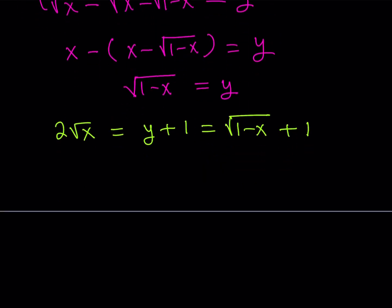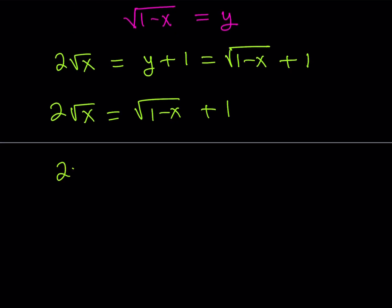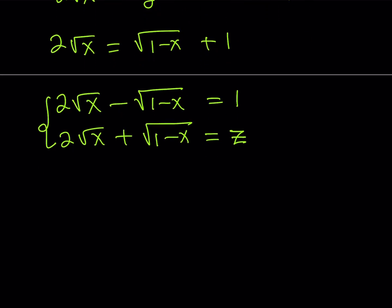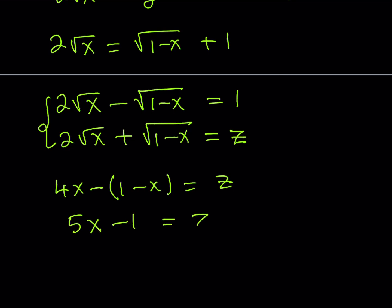Now I get a radical equation which we can solve, and we'll solve it in an interesting way again. I want to put all the radicals on the same side and use conjugates again. This expression pairs nicely with 2 times square root of x plus square root of (1 minus x), which I'll call z. Multiplying the conjugates using difference of two squares gives 4x minus (1 minus x), and the product is 1 times z equals z. Simplifying gives 5x minus 1 equals z.